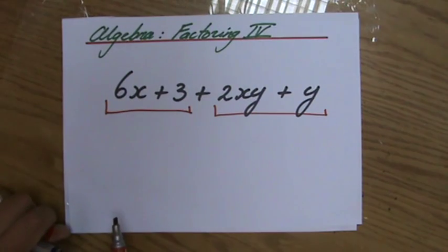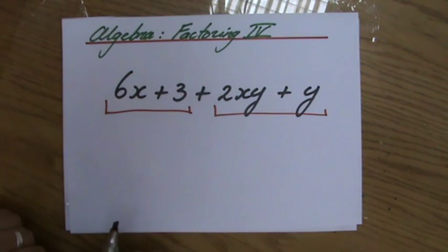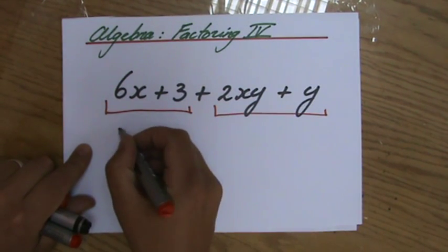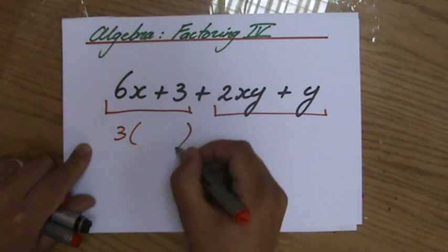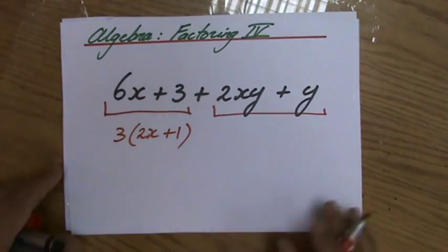Now, I'm going to look at group 1 and asking myself, is there a common factor for group 1? 6x plus 3. Yes, there is. You tell yourself the common factor is 3. And in those brackets, you're going to get them 2x plus 1. That's for group 1.